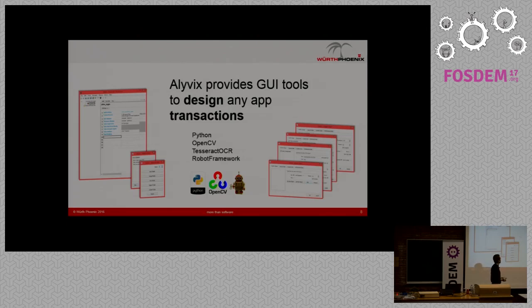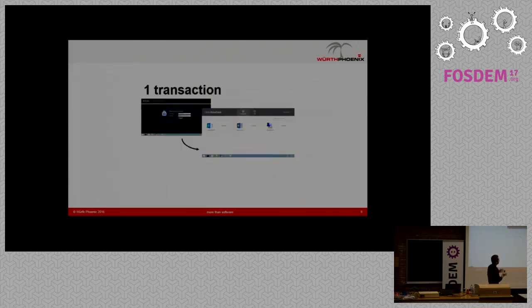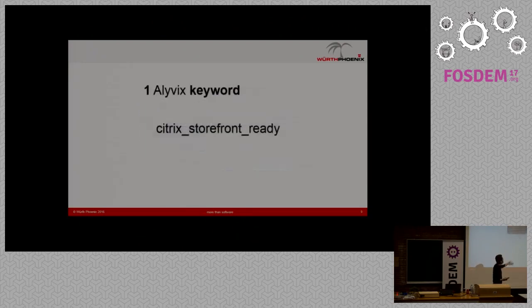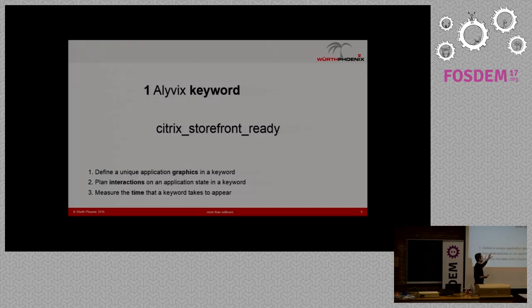First of all, Alivix can automate any application — it provides you with graphical user interface tools to design those transactions. It's made with Python, OpenCV, Tesseract OCR, and Robot Framework. The idea is that you take a transaction and convert it into a custom Alivix keyword.